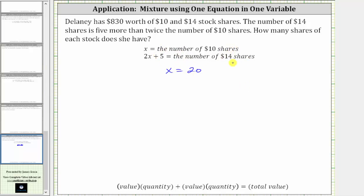The number of $14 shares is equal to 2x plus 5. Substituting 20 for x, we have two times 20 plus 5, which is equal to 40 plus 5, which is equal to 45.